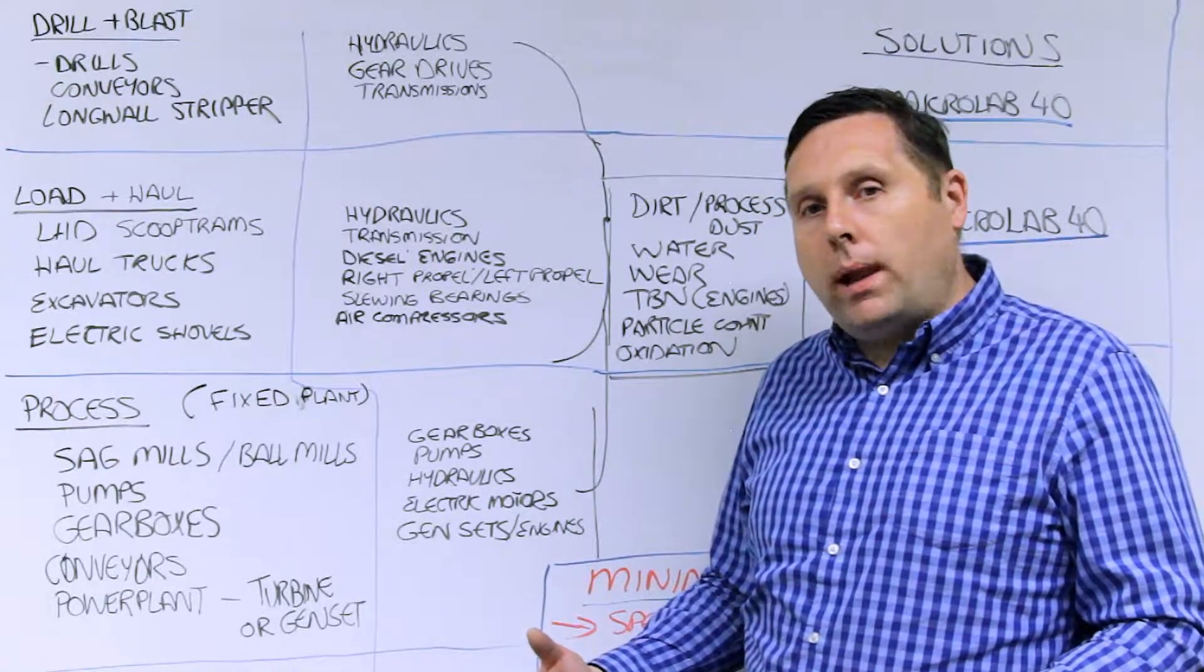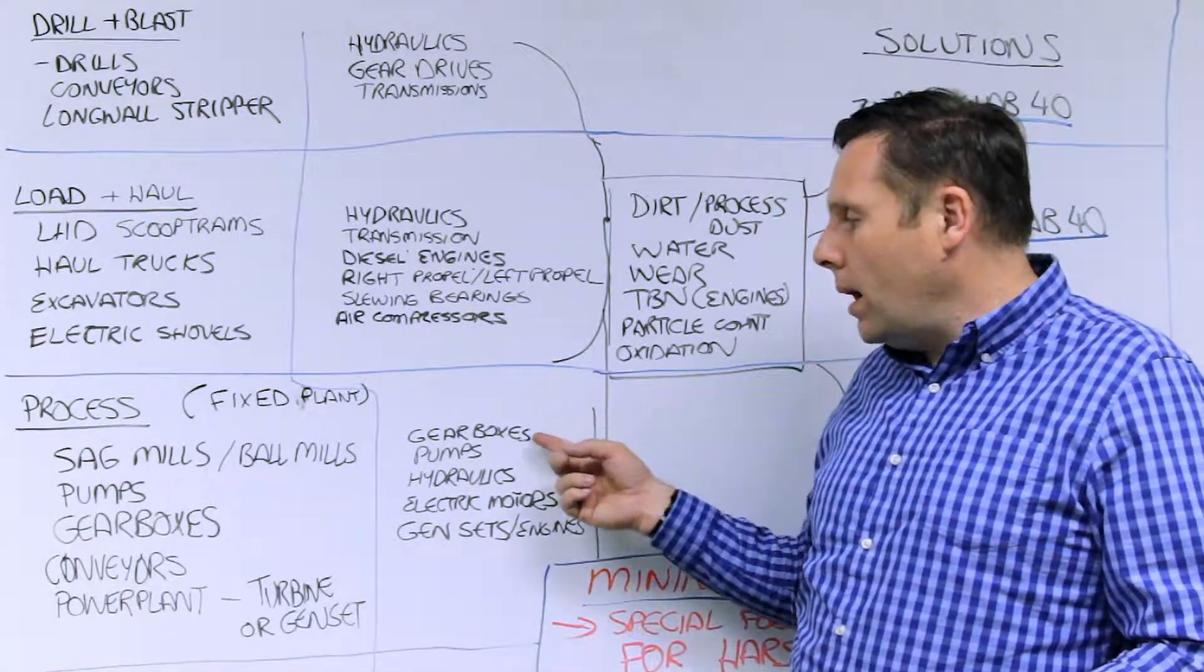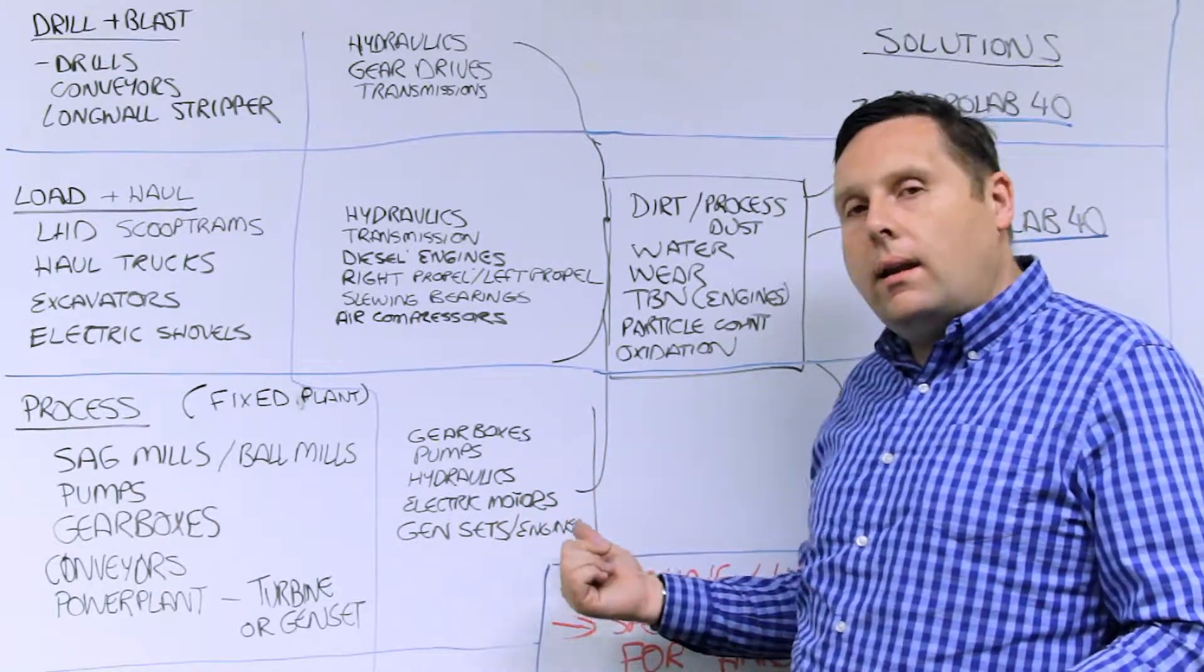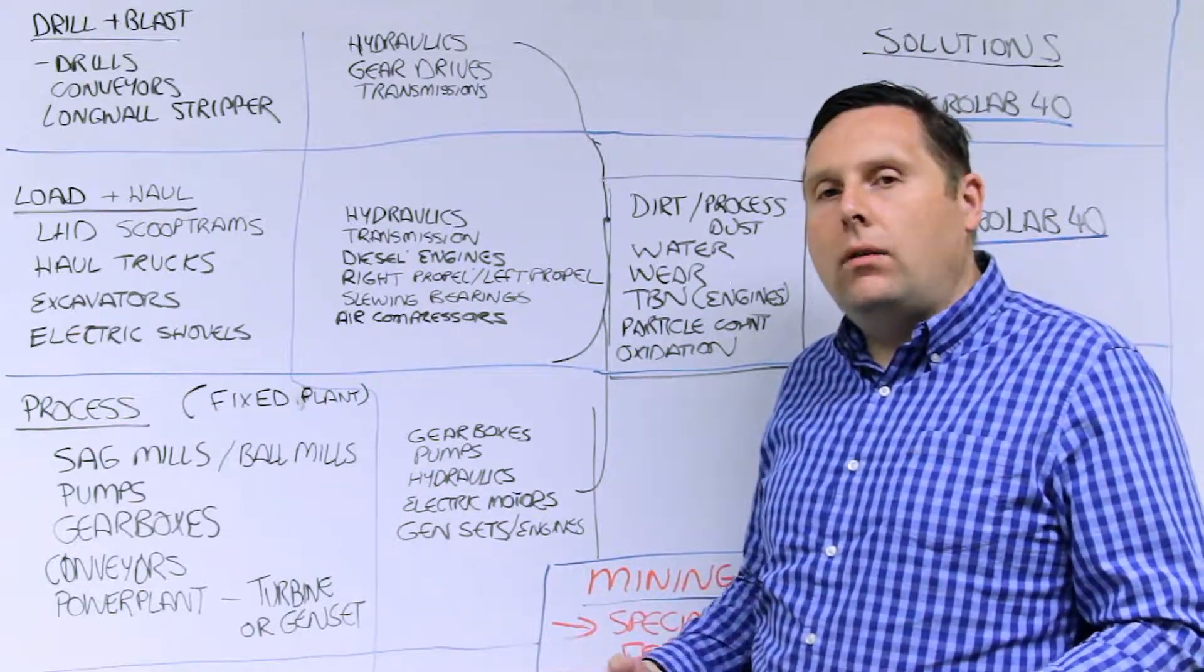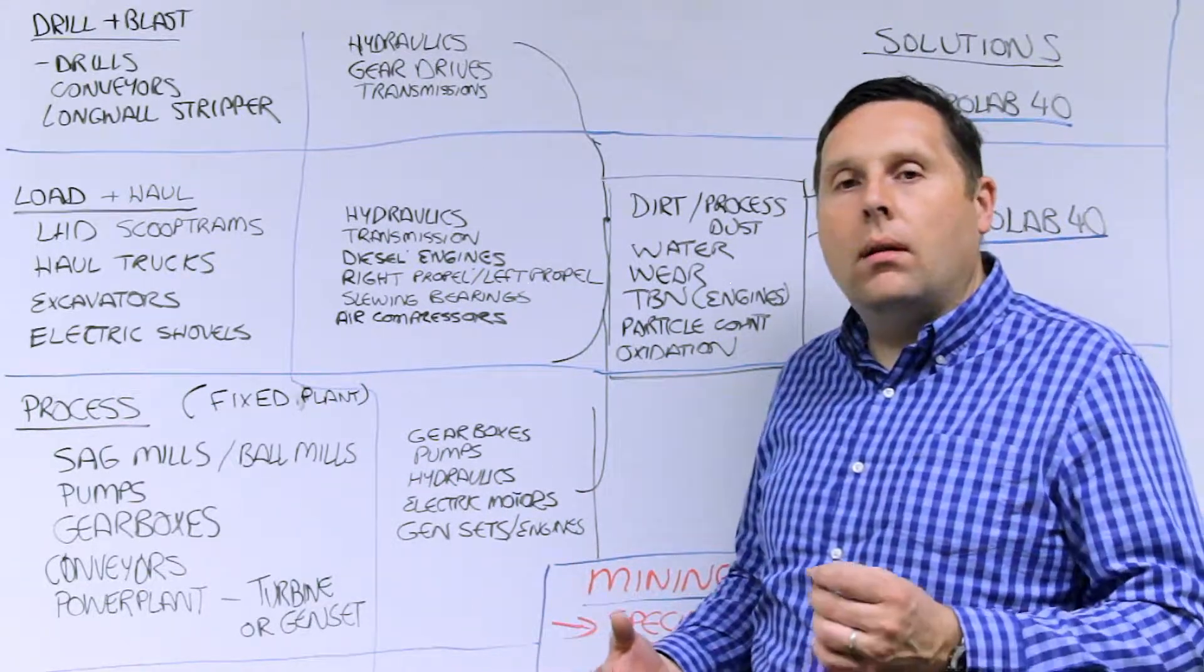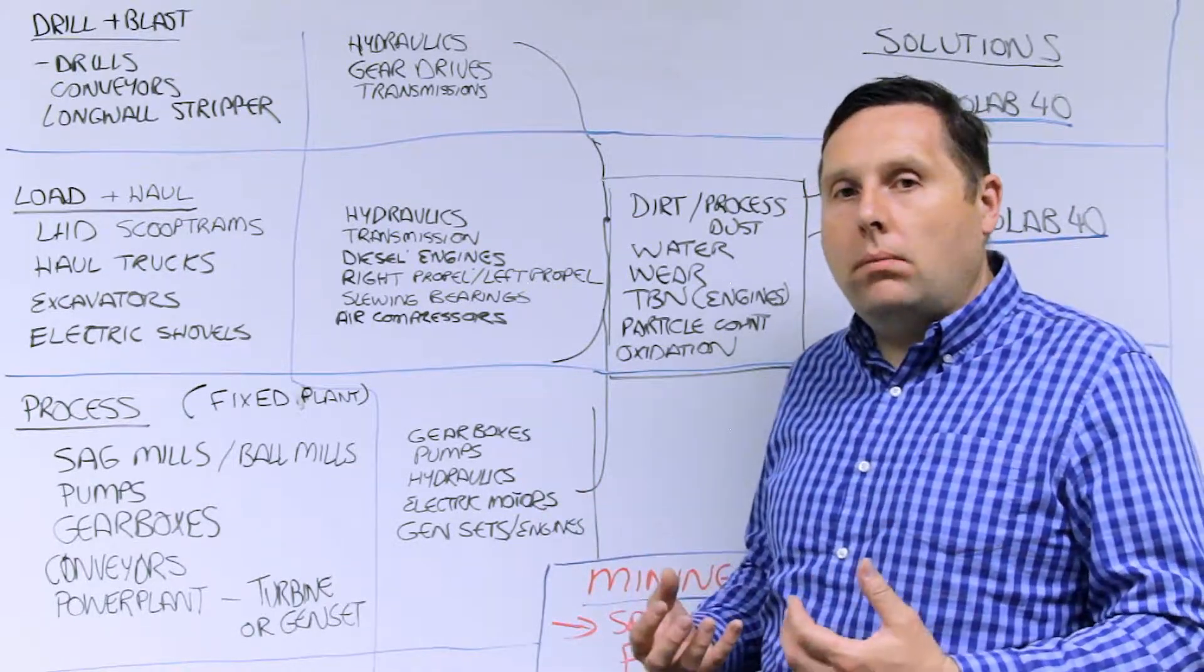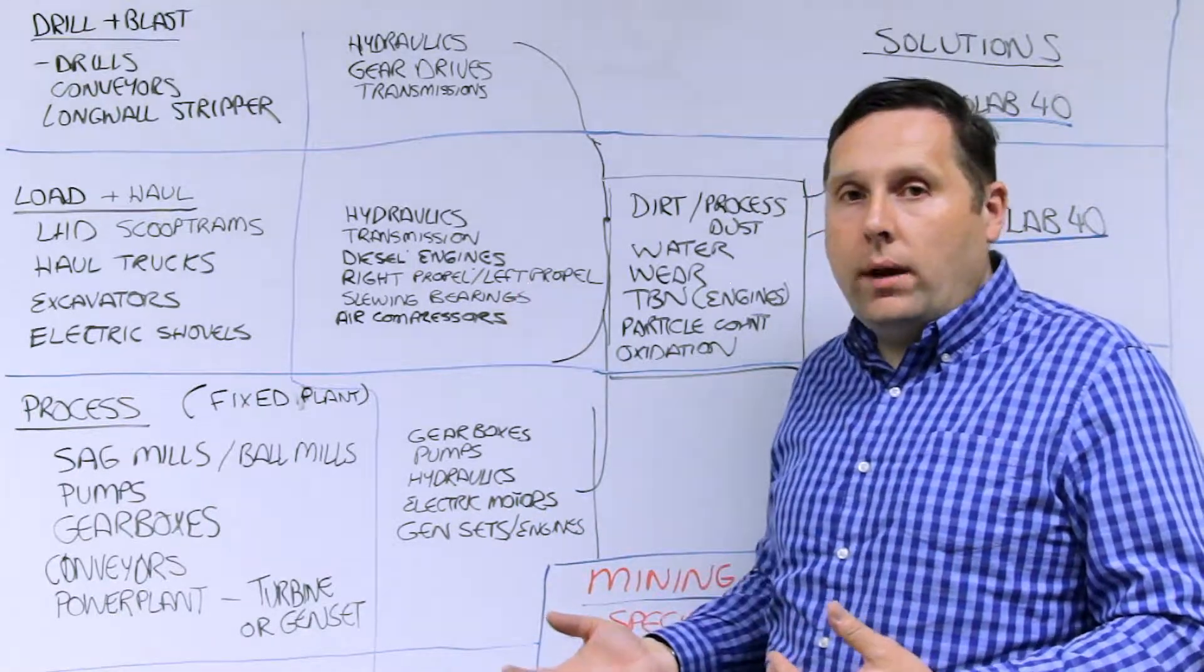And so that's a power section. In those, you've got gearboxes, pumps, hydraulic systems, electric motors, gen sets, and engines. So on any one site, even if it's a small mine site, you can have many thousands of individual sampling points where you can actually be able to routinely check. And all of these are driving lubricants.